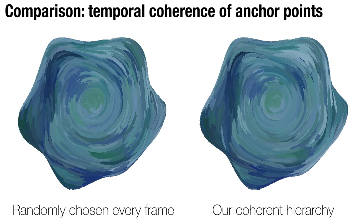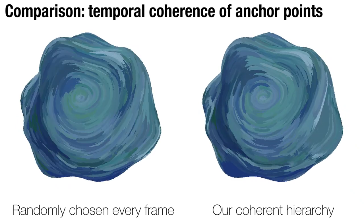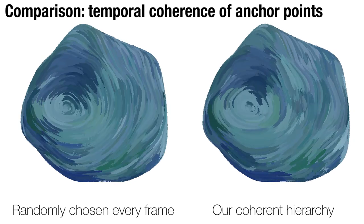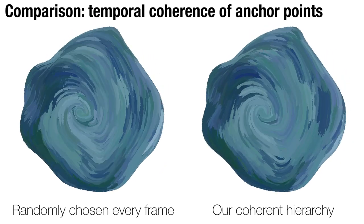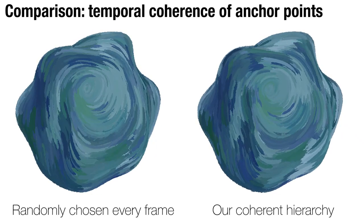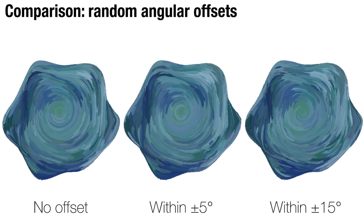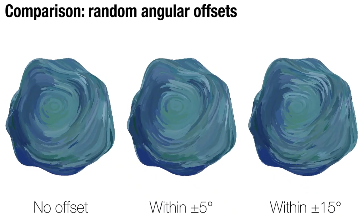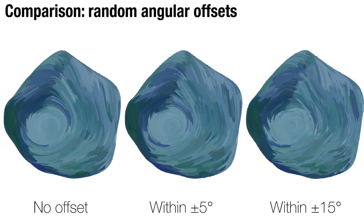If the anchor points are chosen randomly per frame, we see strong temporal flickering due to the shift in stroke positions and the change in drawing orders. With our coherent hierarchy of anchor points, we see much improved temporal coherency. With no random angular offset, the resulting drawing seems too ordered and unnatural. Random angular offsets allow the emulation of natural variations seen in hand-drawn styles of artists.